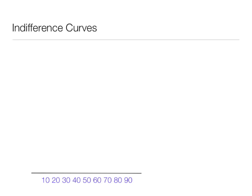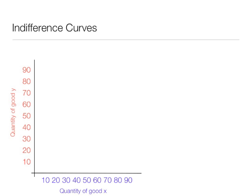Along the x-axis we plot quantity of good x. Along the y-axis we plot quantity of good y. Again, what we do is we say that utility is a function of the consumption of two goods x and y.